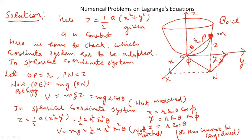Here, as z = (a/2)(x² + y²) and a is a constant, we need to decide which coordinate system to adopt. In Cartesian coordinates x, y, z, we can correlate with spherical or cylindrical coordinates. So first we will consider the spherical coordinate system.